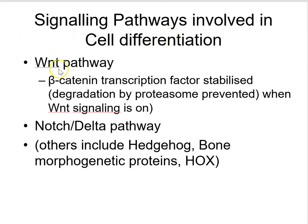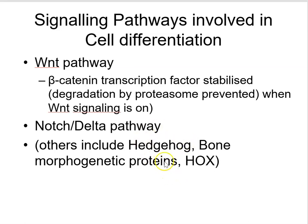I will now go through key stem cell signaling pathways: first the Wnt pathway, then the Notch-Delta pathway. There are also others such as Hedgehog, Bone Morphogenetic Protein, and Hox. The Wnt pathway stands for Wingless Integration — a pathway disrupted in fruit flies used as a developmental model. If the Wnt pathway is disrupted, flies develop with no wings; disrupting a different pathway produces notched wings, and Hedgehog disruption results in spiky fly larvae — hence the names.